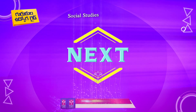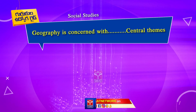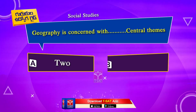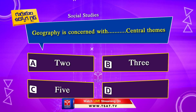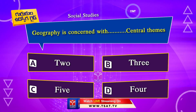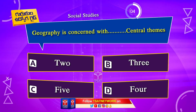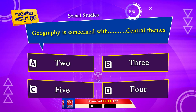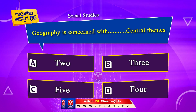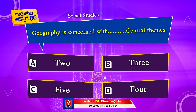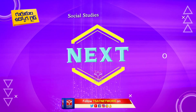Next question. Geography is concerned with how many central themes: Option A. Two. Option B. Three. Option C. Five. Option D. Four. The correct answer is Option C. Five.